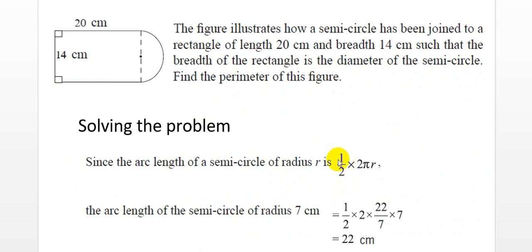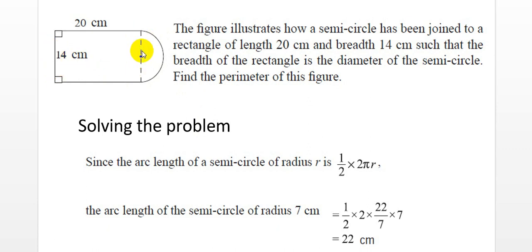We use pi = 22/7. As you can observe, the breadth of the rectangle equals the diameter of the semicircle, which is 14 centimeters. Since we need the radius, which is half the diameter, we take 14 ÷ 2 = 7 centimeters. That is the radius of this particular semicircle.